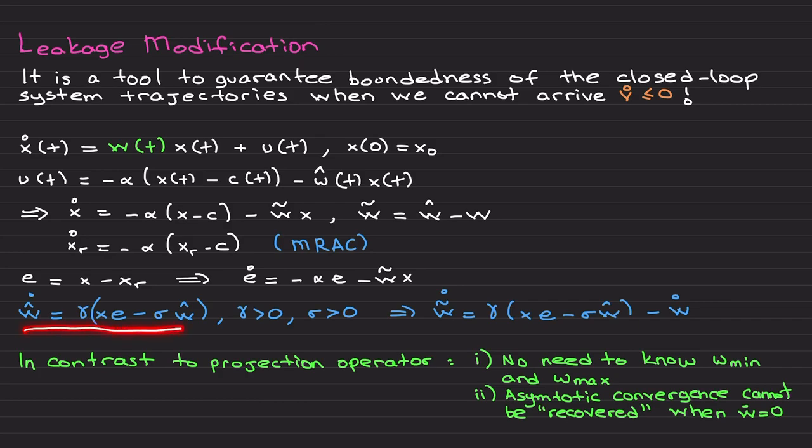What is the disadvantage? When you implement this parameter estimate and after some time w dot becomes zero, meaning that this becomes constant, then it is not possible to recover asymptotic convergence of the error dynamics. This is the advantage; this is the disadvantage of this method.